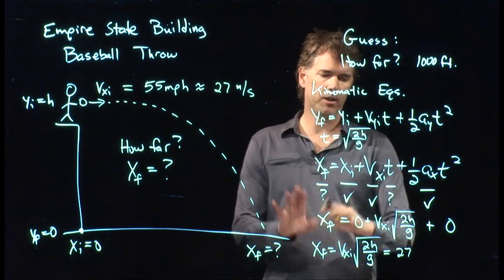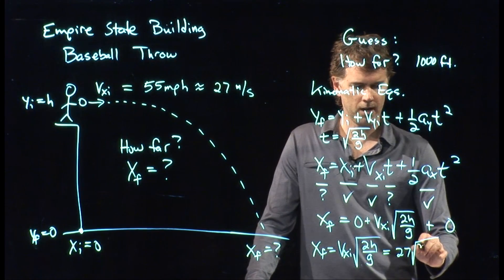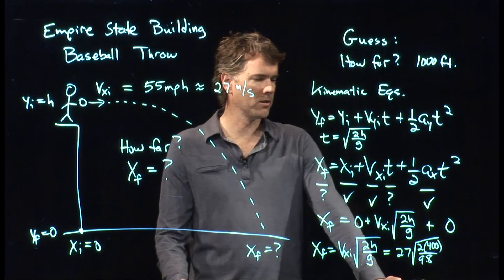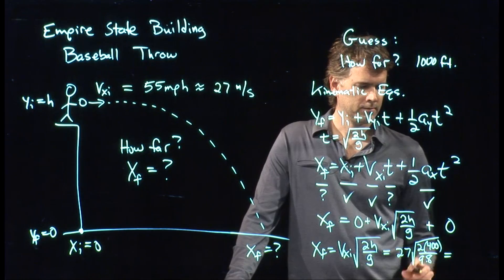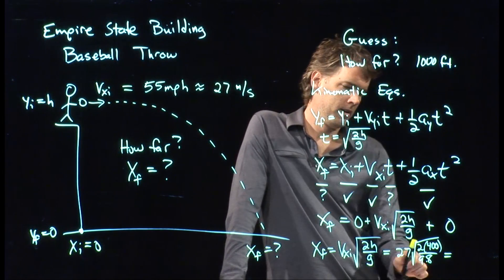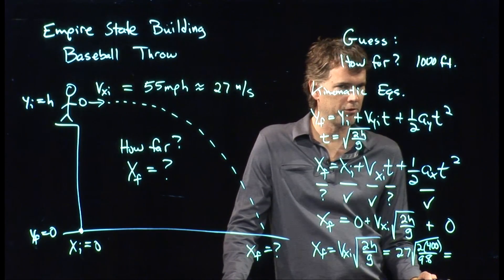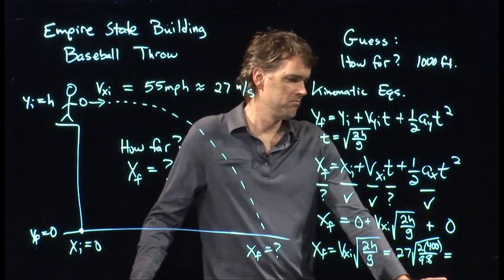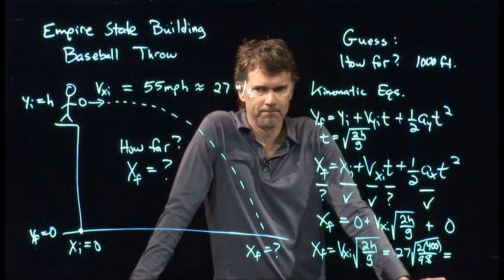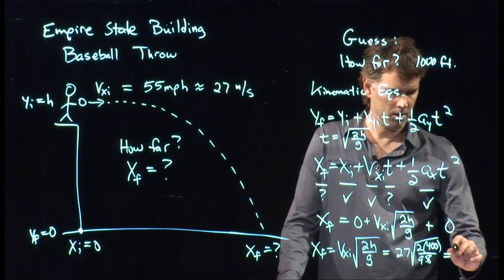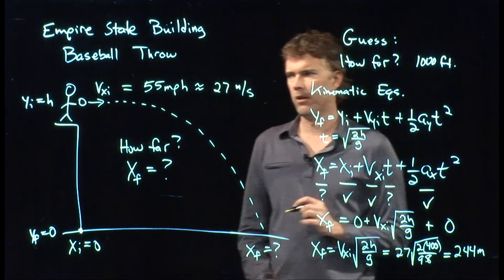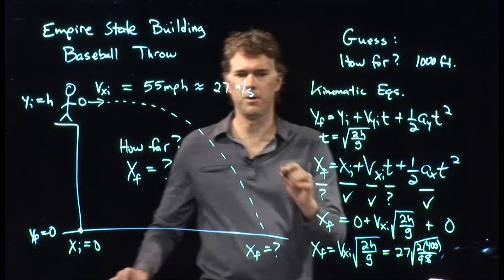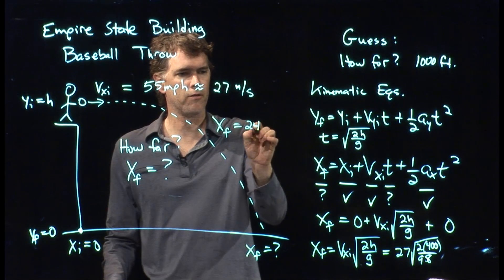So we've got 27. And now we're all in SI units, so we don't have to write the units down every time. We've got a 2. We've got a height of 400. And we have G of 9.8. And somebody run that in your calculator and tell me what you get. I'll approximate it here. We knew that the time was about 9. 27 times 9 is what? Well, that's pretty close to 30 times 9, which is 270. And then we need to subtract a little bit, so maybe 250. Somebody get a number? What did you get for your number? 243.9. 244 meters. X final is 244 meters.